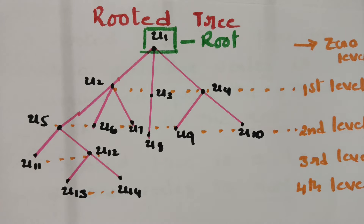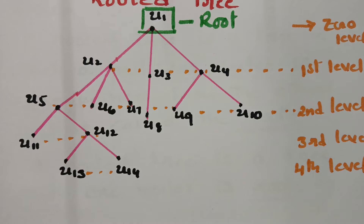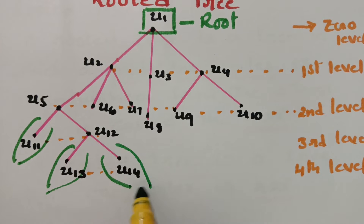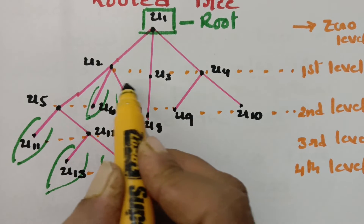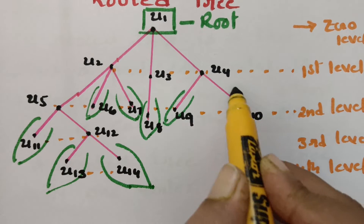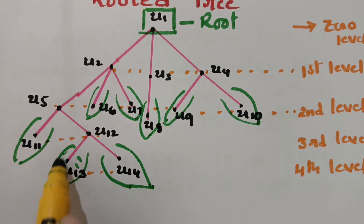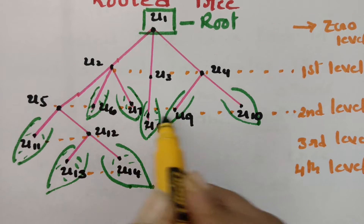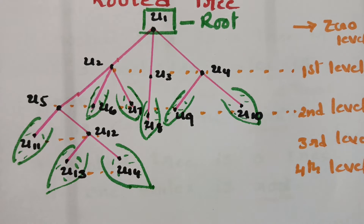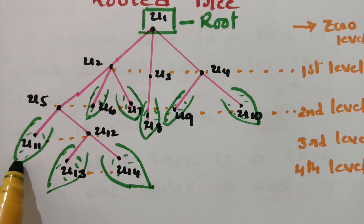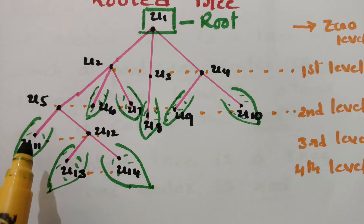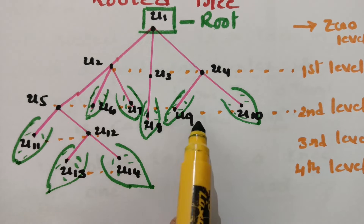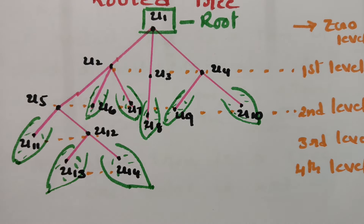Next, we need to learn about leaves. Leaves are the terminal vertices — vertices that have no children. In this example, the terminal vertices are u11, u13, u14, u6, u7, u8, u9, and u10. These vertices have no children and are therefore called the leaves of the graph.